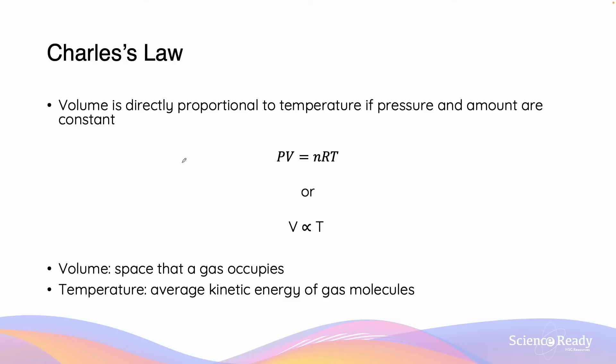So Charles's law states that volume is directly proportional to temperature, but importantly, this is only true if both pressure and amount are constant. So what does this mean?